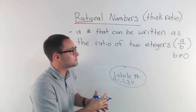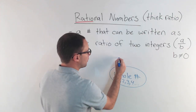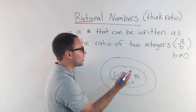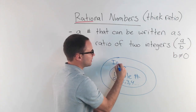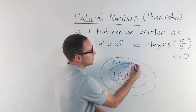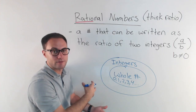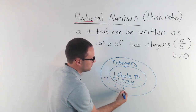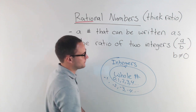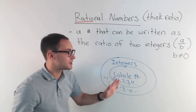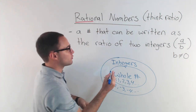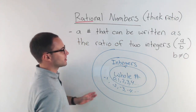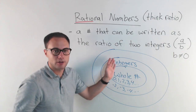Then we talked about integers. Integers include all the whole numbers, but then it also includes the negative whole numbers: negative one, negative two, negative three, negative four, and so on. But it also has all those whole numbers still. So now we're getting into rational numbers.